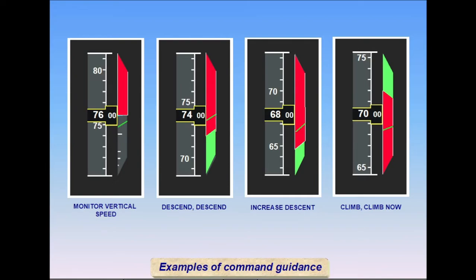These are examples of the visual guidance commands displayed on the vertical speed tape of the primary flight display. The sequence shown progresses from merely monitoring vertical rate to a descent command, followed by an increased descent rate, and finally a reversal command to climb rather than descend. When vertical rate commands are given, the pilot has five seconds to react and begin a climb or descent at the rate recommended by the green bar on the tape.